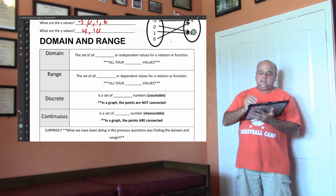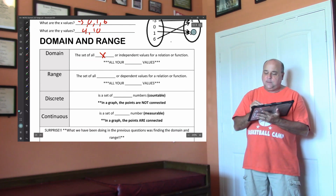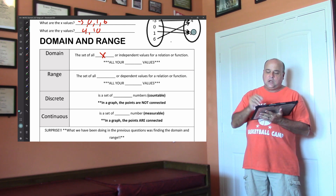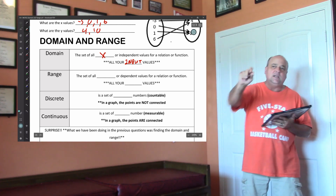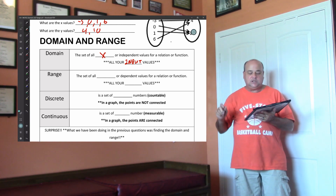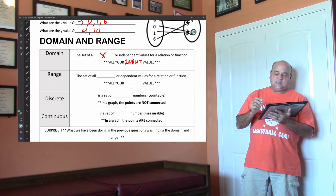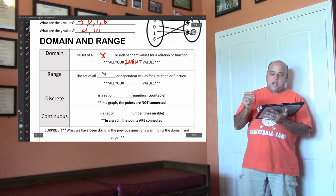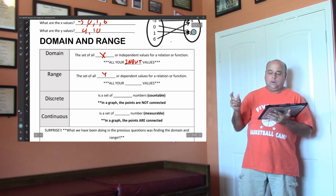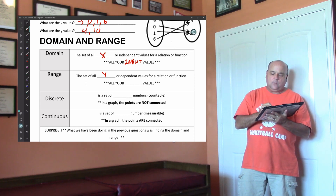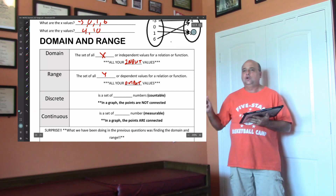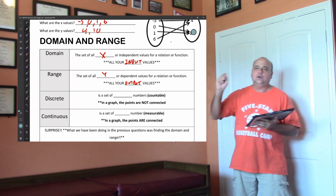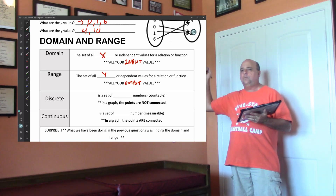So the domain is the set of all x or independent values of a relation — it's all of your x, all of your input values. The domain is the number you put into the function. The range is the set of all y values for a relation or function — all of your output values. So your domain is your input, your range is your output.